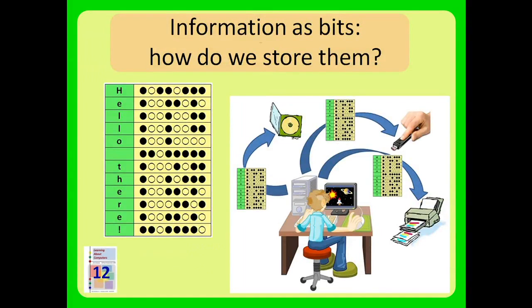We store information as bits. That means with patterns like this: on-off charges of electrical impulses or magnetic charges, or anything else that can represent one condition and a second condition.